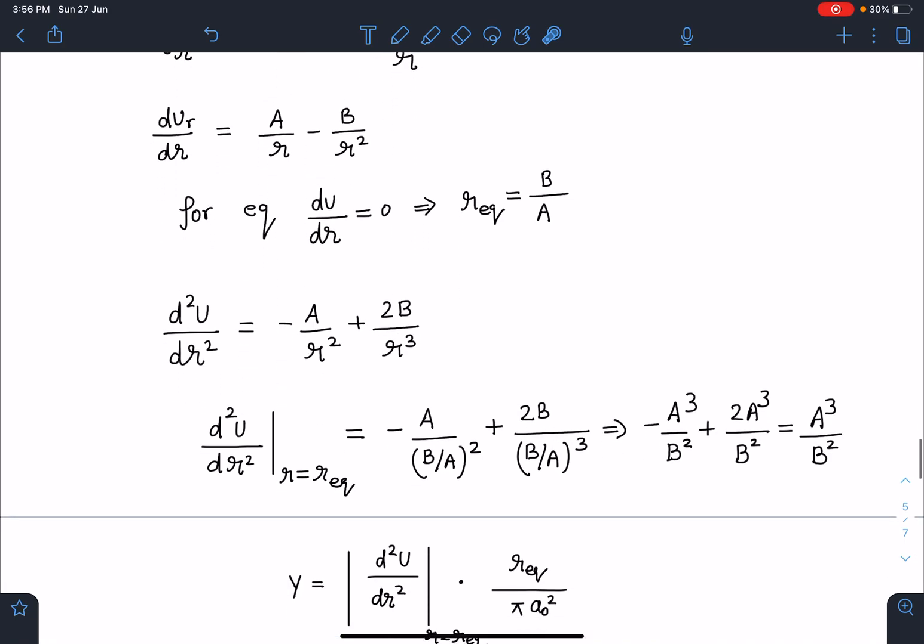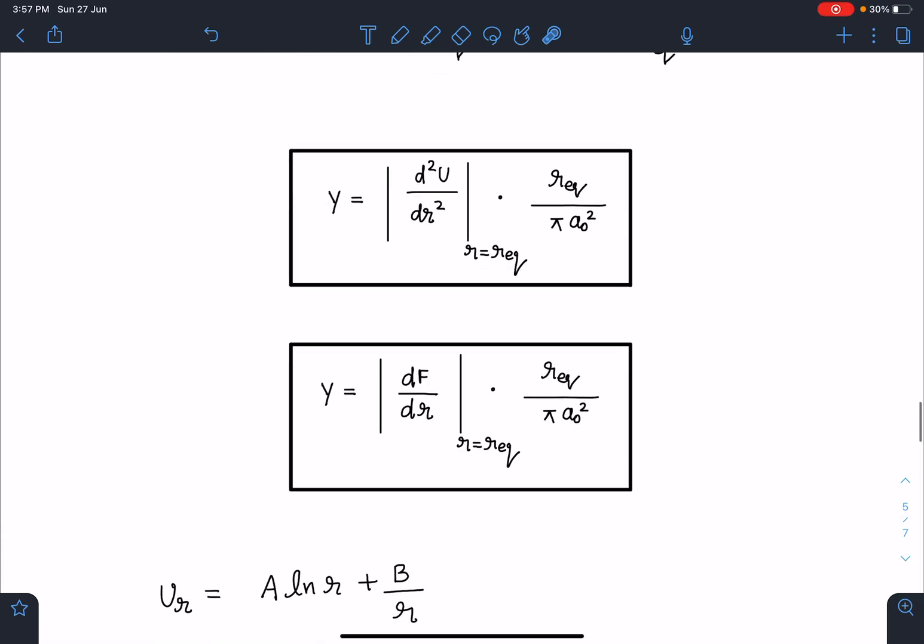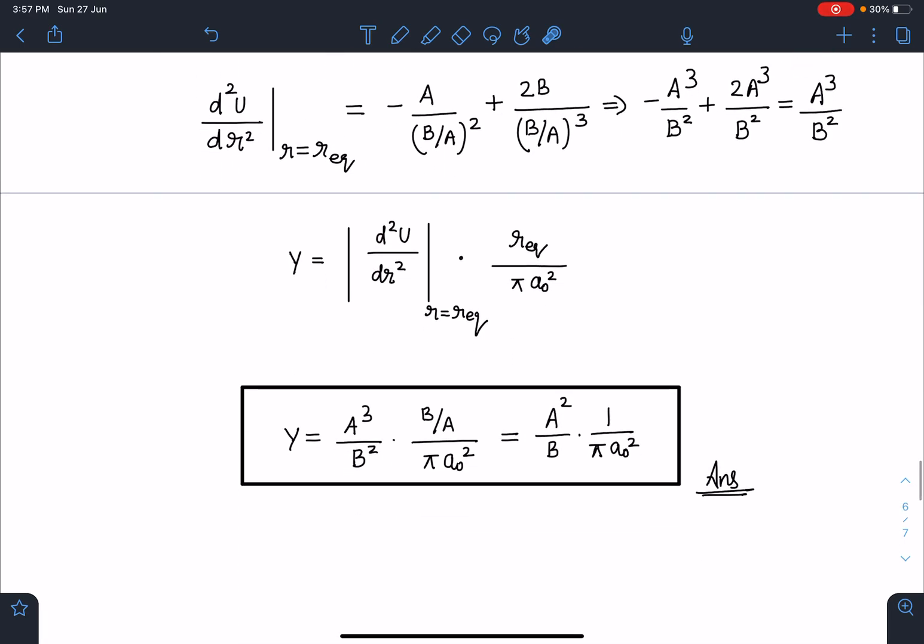Once I know this value, we will substitute these values in this formula and we will get the Young's modulus. So here, Y = (A³/B²)(B/A) divided by πa₀². Our correct answer is going to be A²/B times 1/(πa₀²). This is going to be the final answer for this problem.